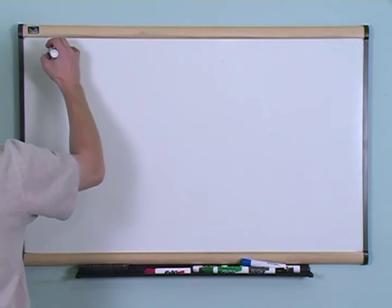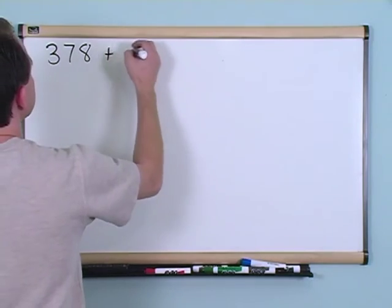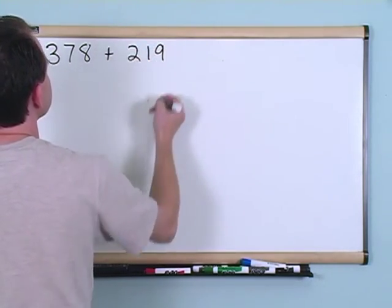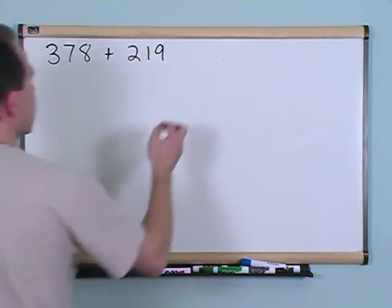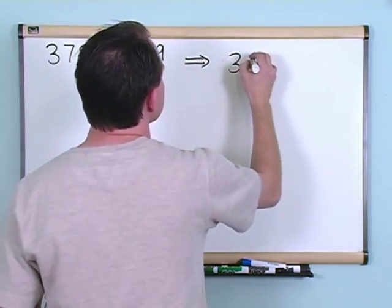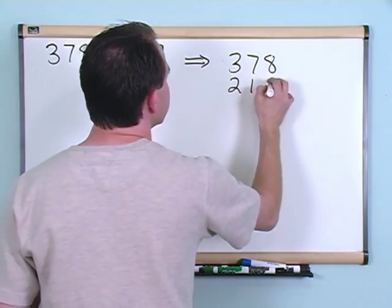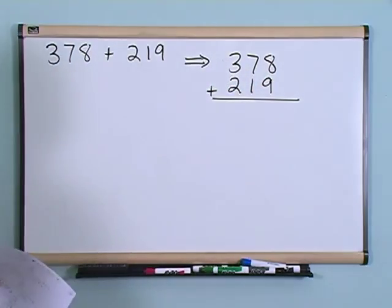So what if you had 378 plus 219? Again, it looks more complicated but all we're going to do is we're going to write these numbers on top of each other. 378 and then 219 and we're going to add them up.